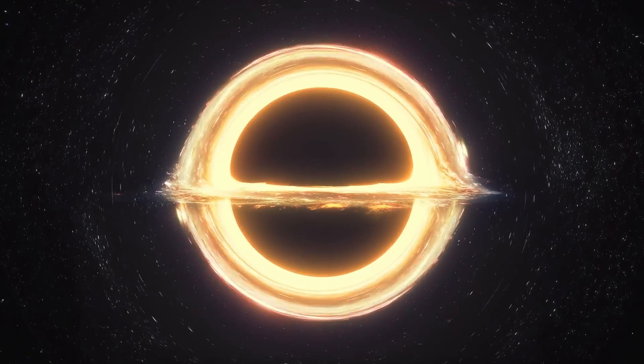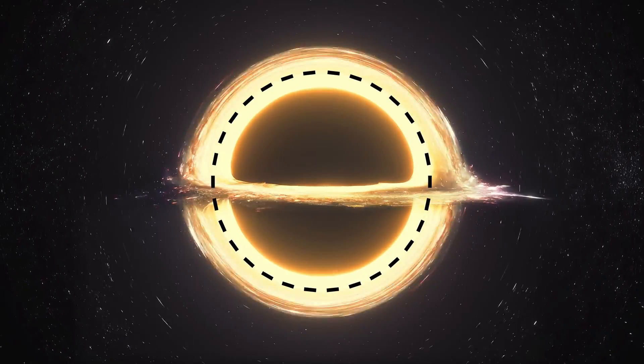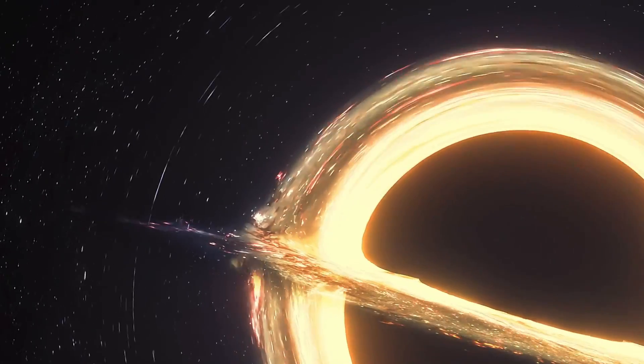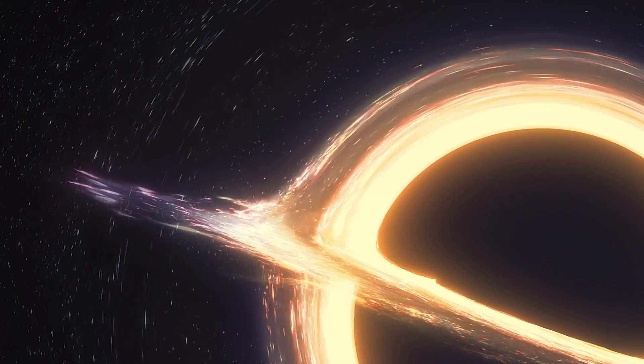The closer light approaches the event horizon, the more its path bends due to the intensified space-time distortion. This shows that under certain circumstances, light cannot escape the grip of a black hole.